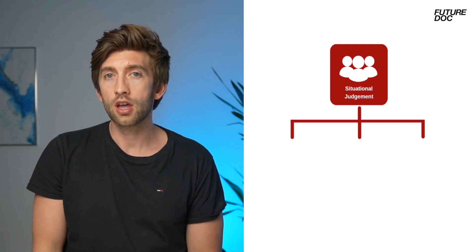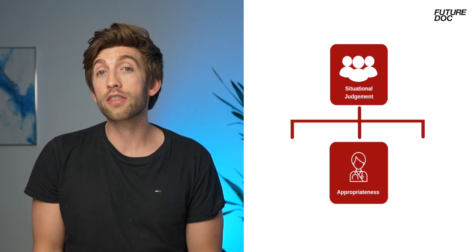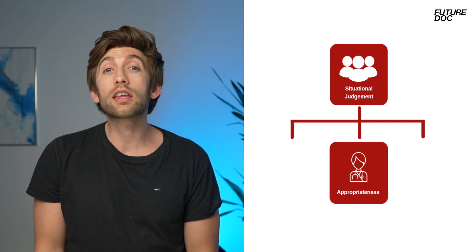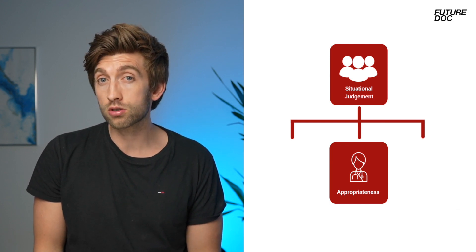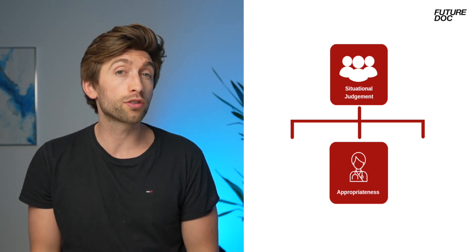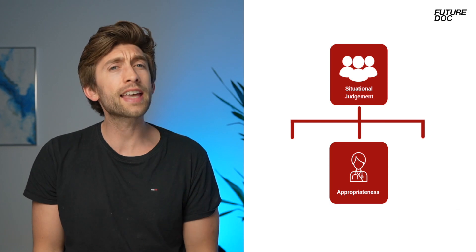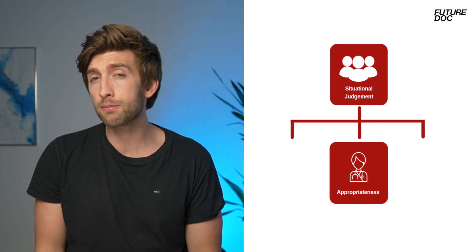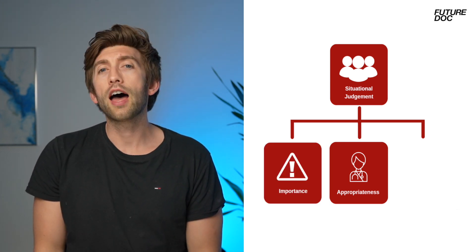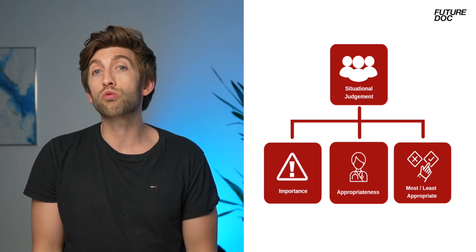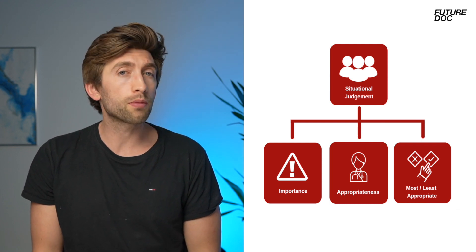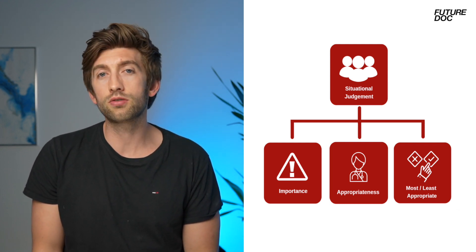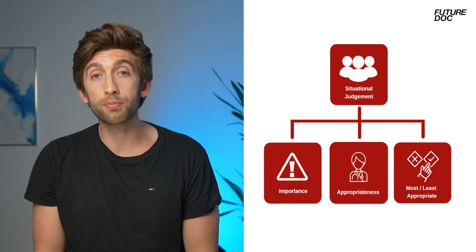The questions come in three forms. The first is rating the appropriateness of an action — they give you a scenario, suggest a course of action, and ask on a scale of one to four how appropriate it is. The second type is the same but based on order of importance. The final type is ranking: they give you three courses of action and ask you to identify the most appropriate, the least appropriate, and the one in the middle.